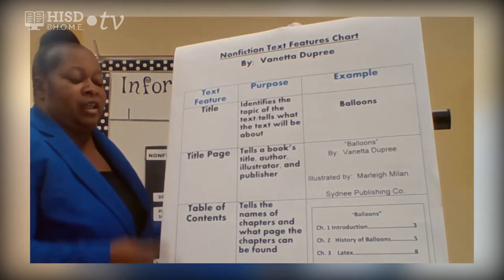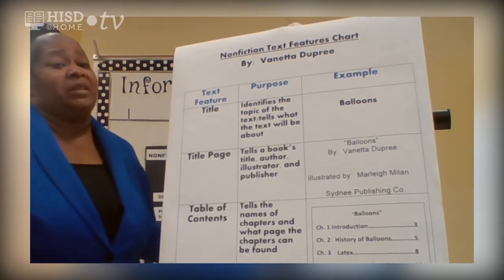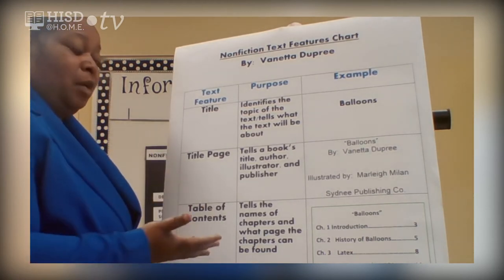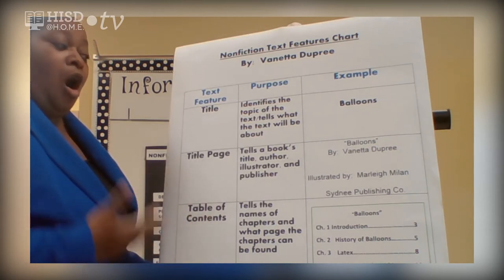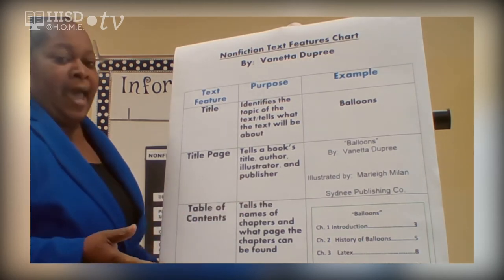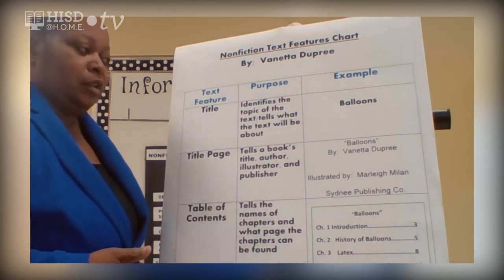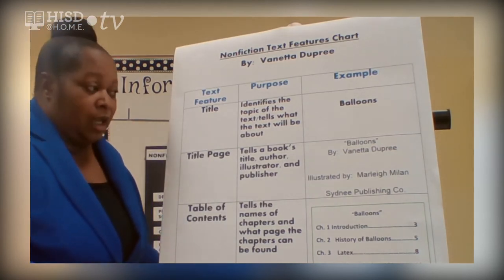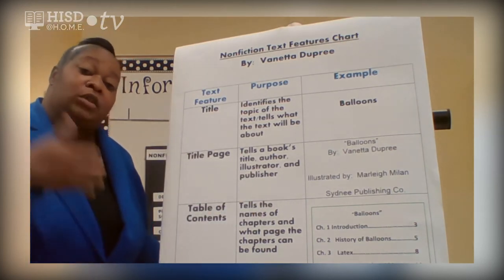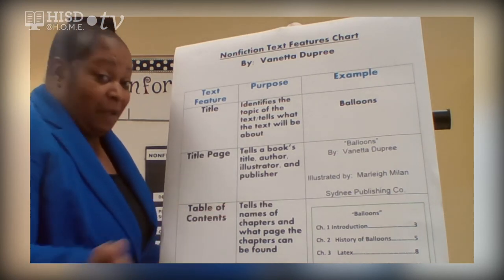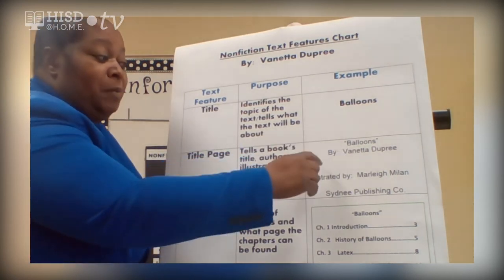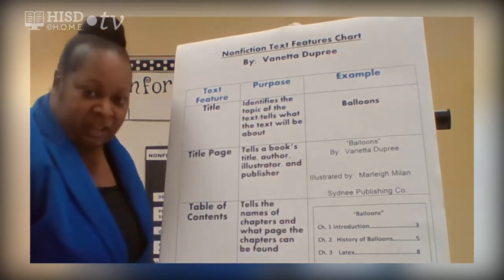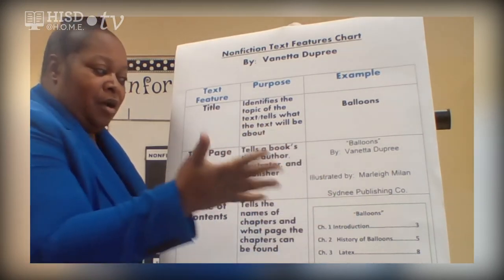Another text feature is the title page. Sometimes kids just skip the title page — don't skip it. The title page tells the book's title, author, illustrator, and publisher. You usually flip the cover of the book and you will see a title page before the author goes into the story. Our pretend book is "Balloons" by Vanetta Dupree, illustrated by Marley Malone, from the Sydney Publishing Company.